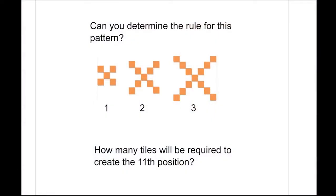In today's lesson, we're going to continue looking at patterns to algebra. However, we're going to be focusing on visual patterns that only have one color. So if we look at this example here, can you determine the rule for this pattern? And if you can come up with the rule, how many tiles would you think would be required to create the 11th position?